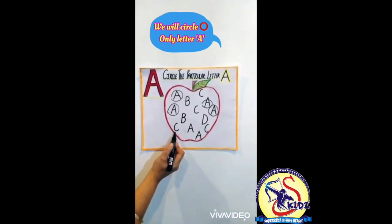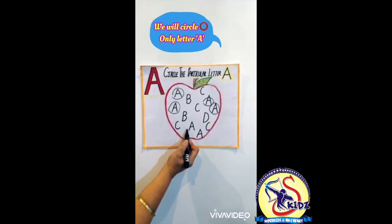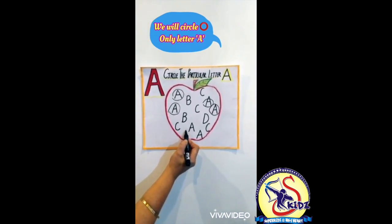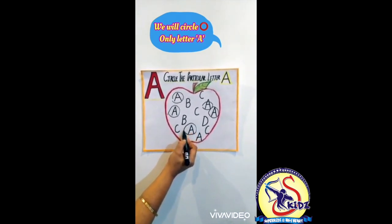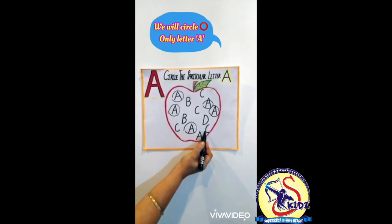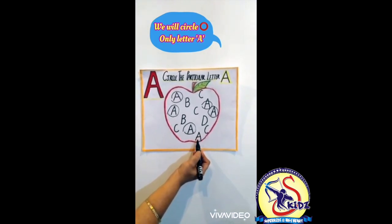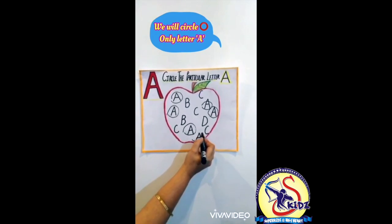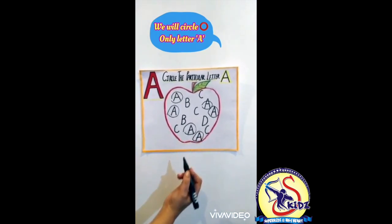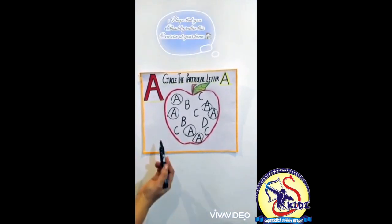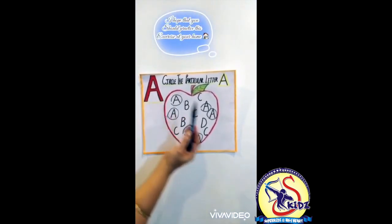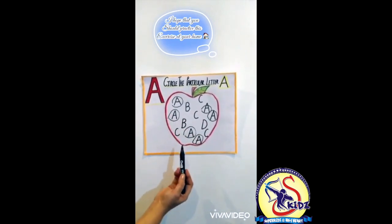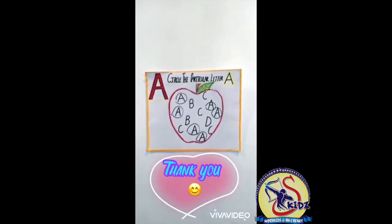Is this letter A? No. Is this letter A? No. Is this letter A? Yes. Let's circle it. I hope that you should practice this exercise at home. Thank you.